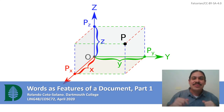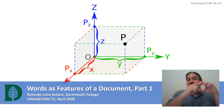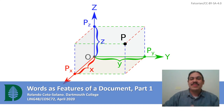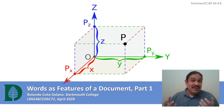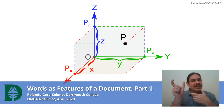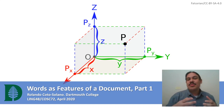In this video we'll use words as features of documents, so that a document will be defined as having the word sushi or not, having the word Hanover or not. This will let us measure the similarity between two documents, measure the distance between a search query and a document, and help us cluster similar documents together.